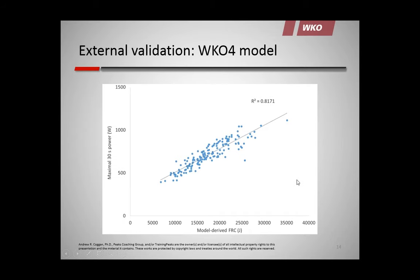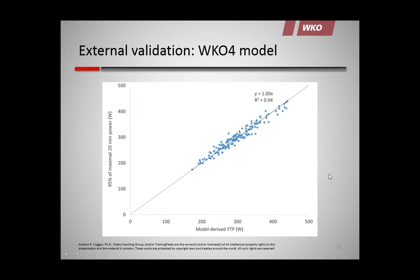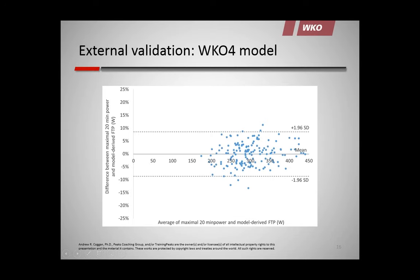The model-derived FTP compared to Hunter's classic approach — 95% of 20-minute power — shows a tight R-squared with a slope of exactly 1.0, so on average they give you the same answer. The mean is within 0.2% of each other, but the 95% confidence limits are plus or minus about 8%. Occasionally some people will be different, and then you have to answer the question why — we know that somebody with a really high FRC can bang out a really good 20-minute effort.